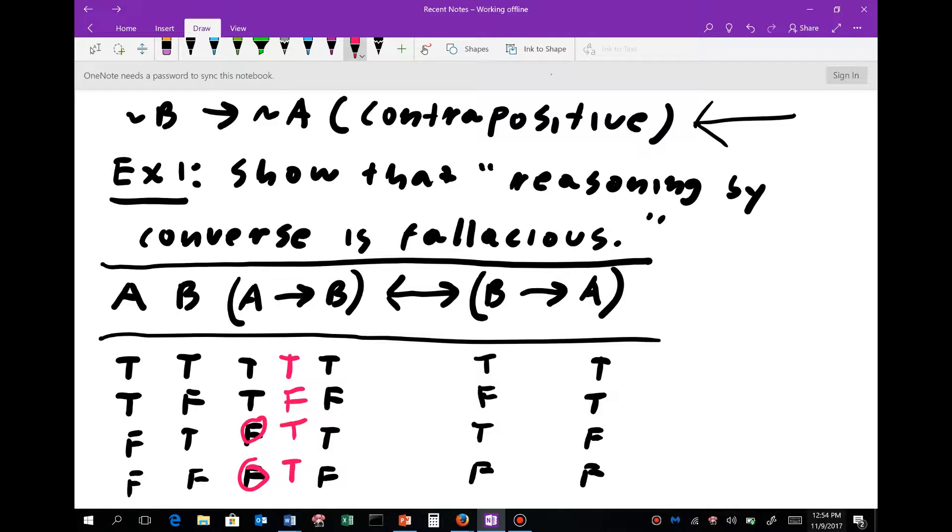True implies true is true. False implies anything is true. True implies false is false. And false implies anything is true. So this should be pretty quick also. Pause the video to make sure you can get that.